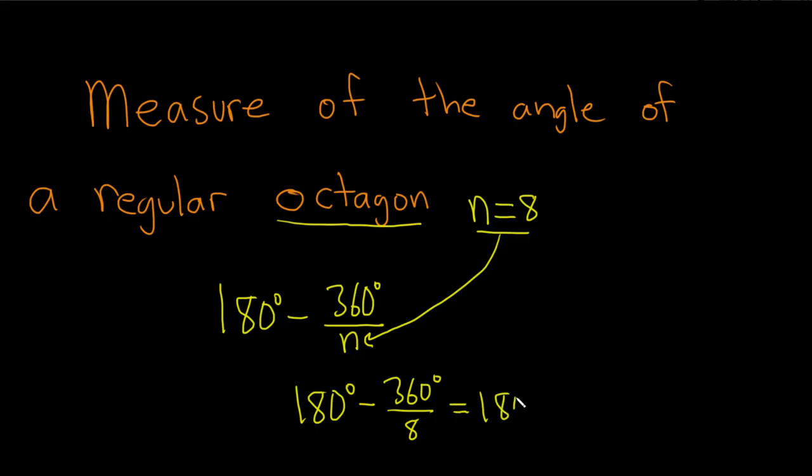This is 180 minus 45, and if you subtract 45 from 180 you get 135 degrees. So this would be the measure of an angle of a regular octagon.